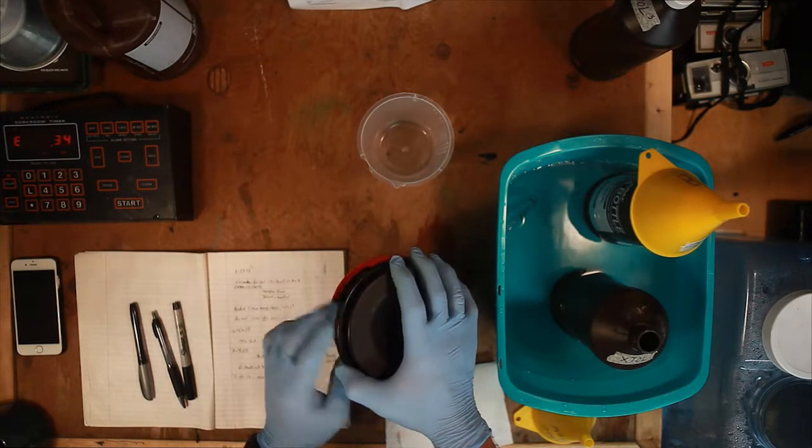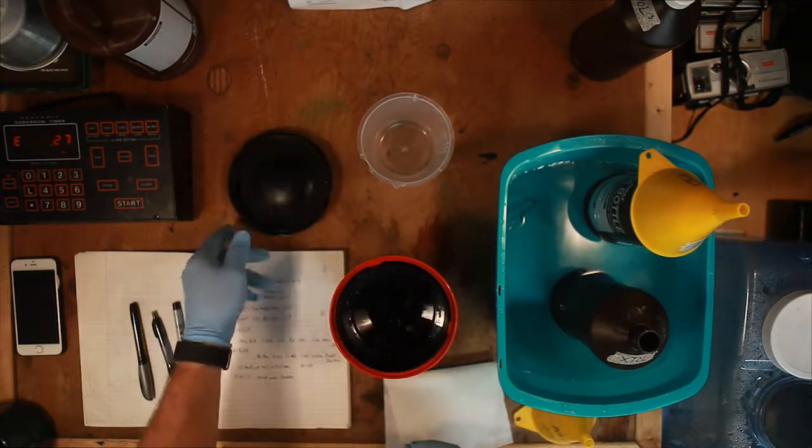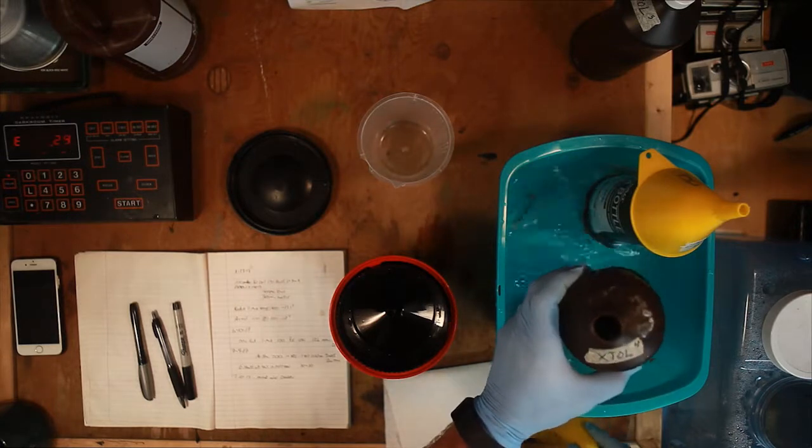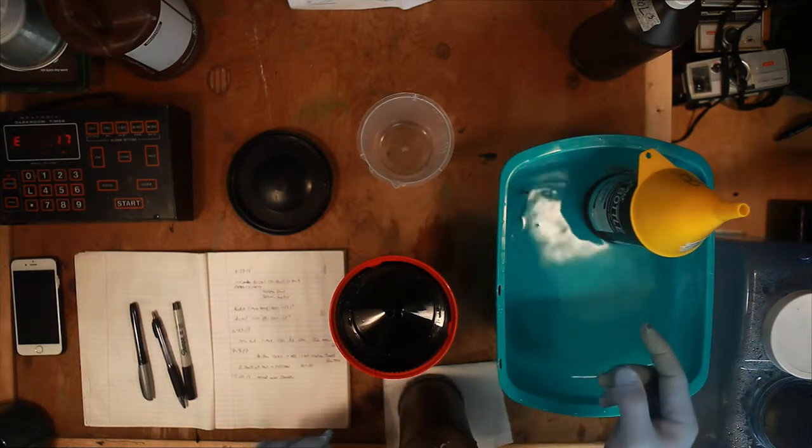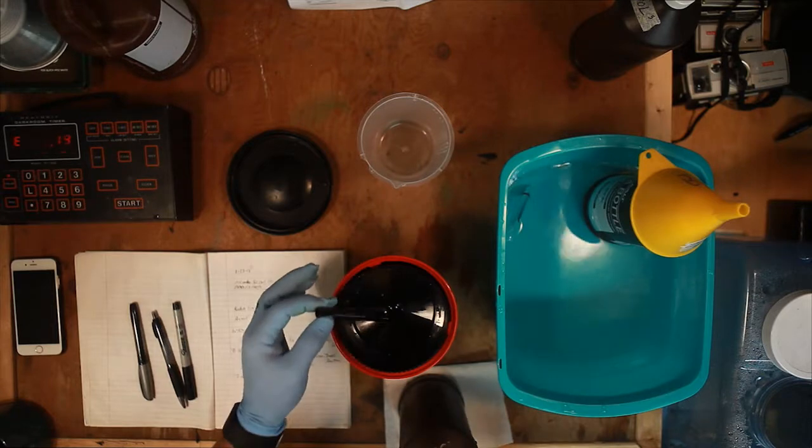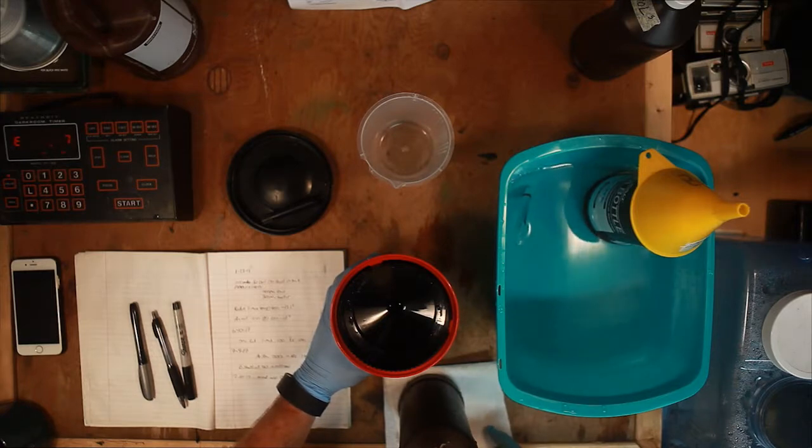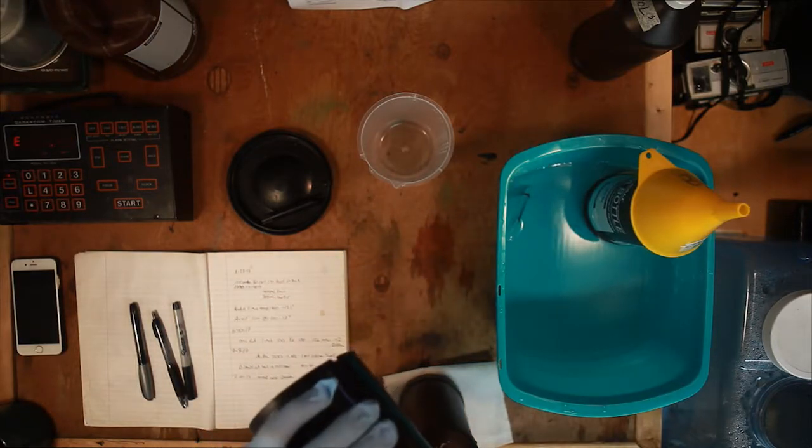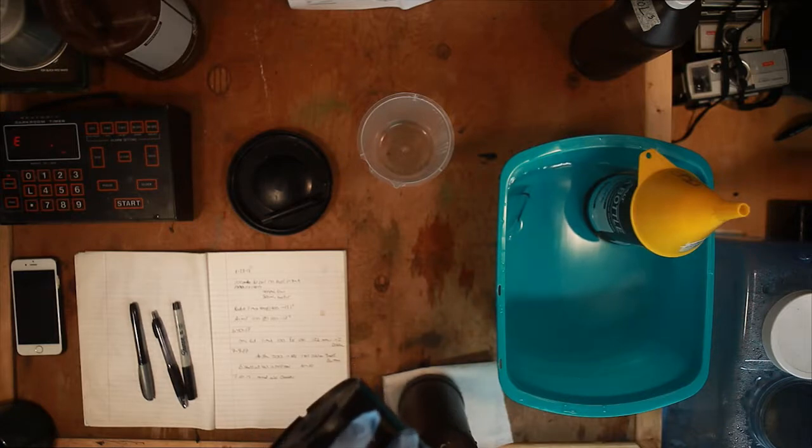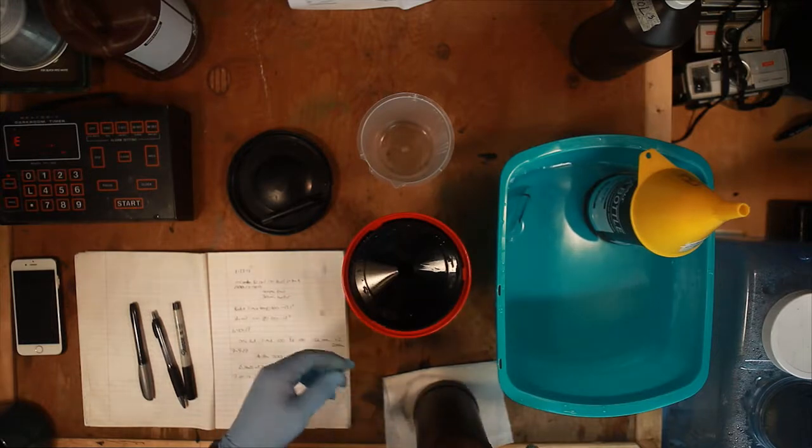As we wind down here we're going to give it one last agitation. Then as the timer runs out we're going to pour this right back into the color developer tank and seal that off before we move on to our blix. Pouring it back in. There we go.